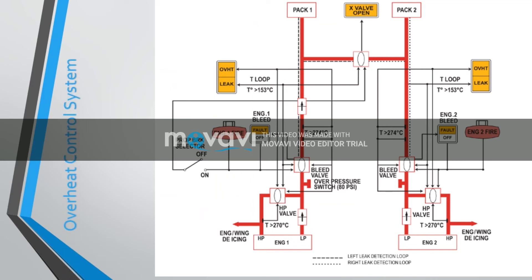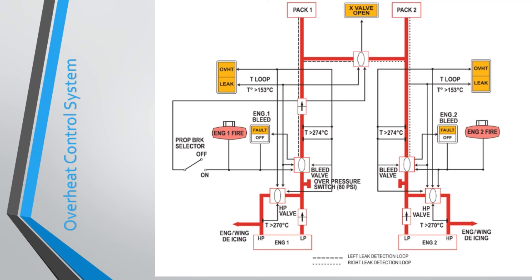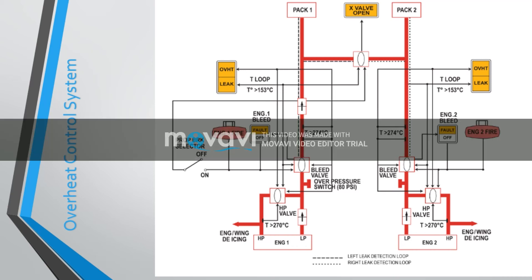The overheat control system includes thermal resistance switches which are installed downstream of the bleed valve. These switches, which are duplicated for safety, ensure that the HP bleed valve and the bleed air shut-off valve are closed whenever any abnormal over-temperature conditions occur. They operate at 274 degrees centigrade and are controlled by EMFC.